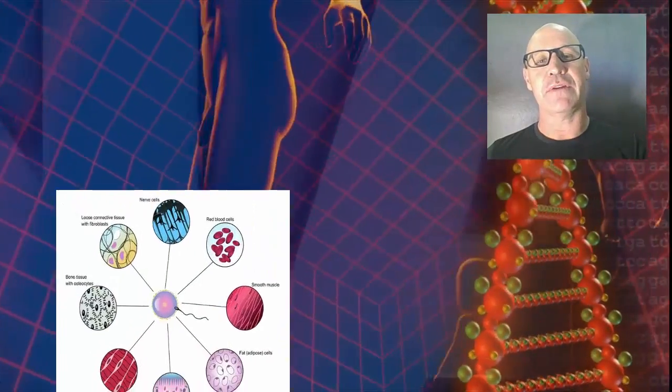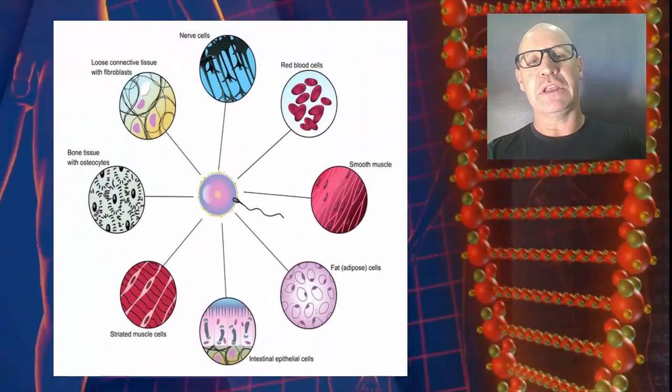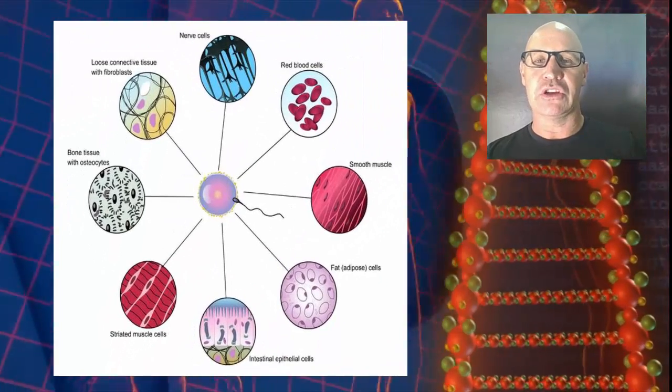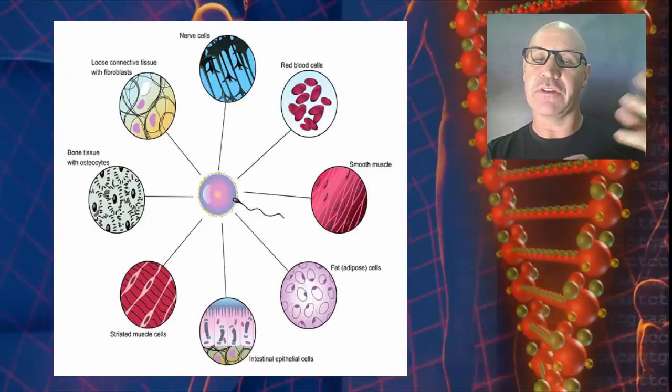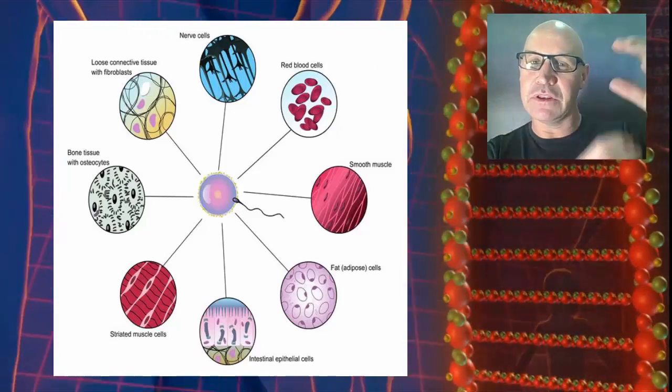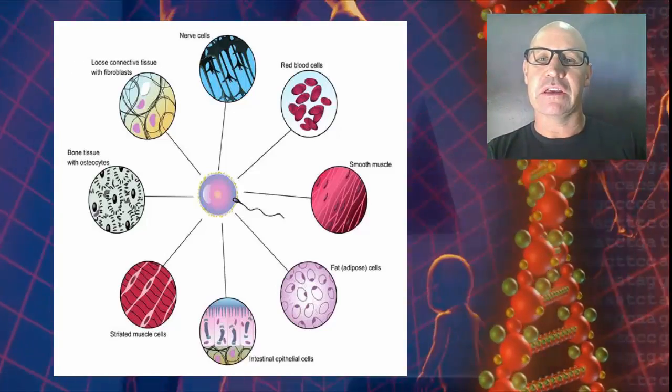In a multicellular organism, every cell has got the same DNA. But of course, different cells have different structures and functions. So we need to have a way in which the different genes contained within that DNA in every cell can be turned on and turned off, depending on what proteins need to be made. And that is the process of regulation of gene expression.